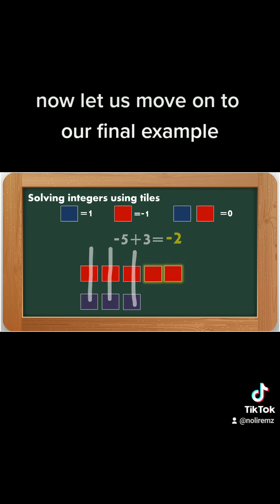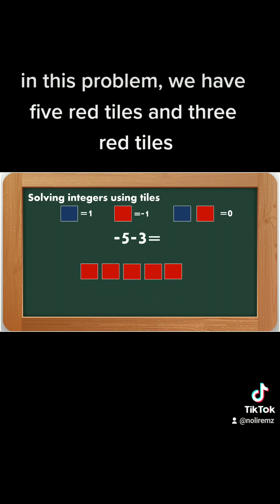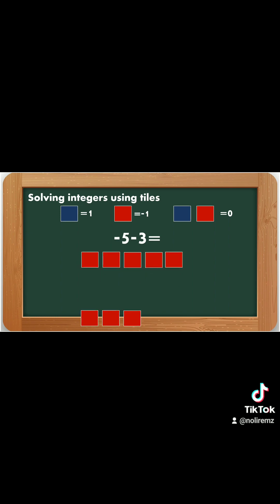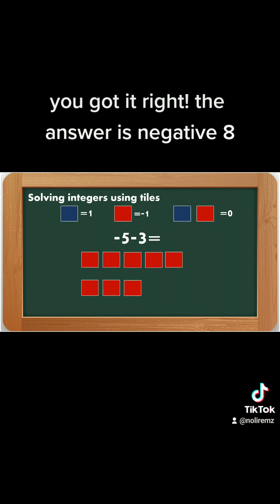Now let us move on to our final example. Negative 5 minus 3. In this problem, we have 5 red tiles and 3 red tiles. So what is the answer to this problem? You got it right. The answer is negative 8.